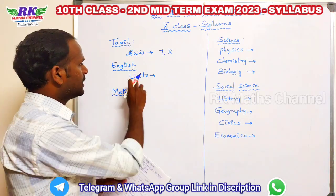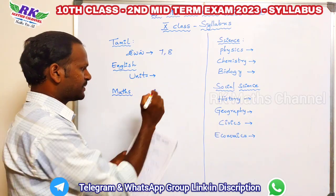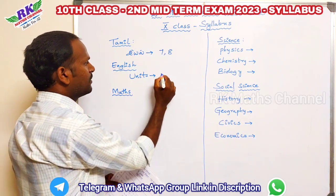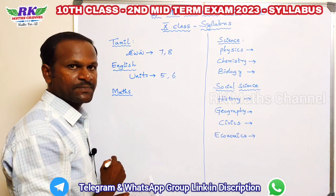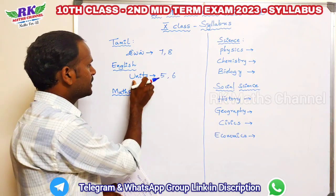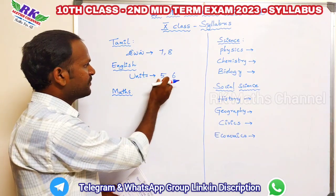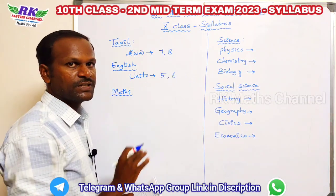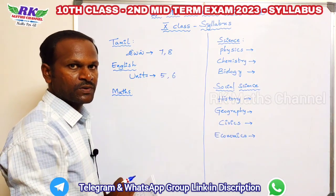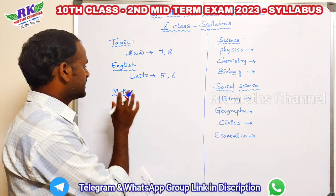In English, we will see units 5 and 6 — the fifth unit and sixth unit. Next, we will see Math.